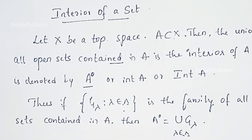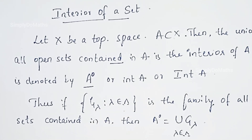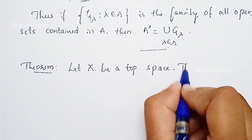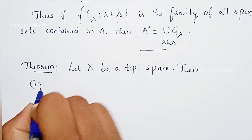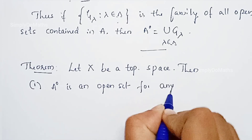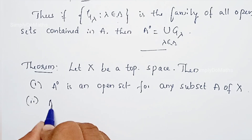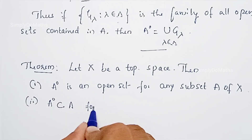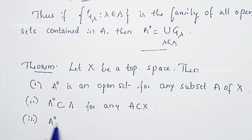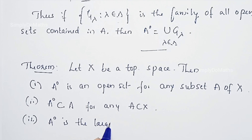Whenever you have the definition of the interior of a set A, where A is a subset of a topological space X, we have one important theorem with properties. Let X be a topological space. Then: first, Aº is an open set for any subset A of X; second, Aº is always a subset of A; and third, Aº is always the largest open set contained in A.